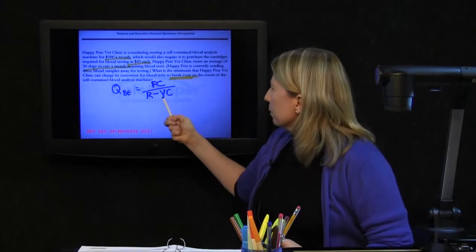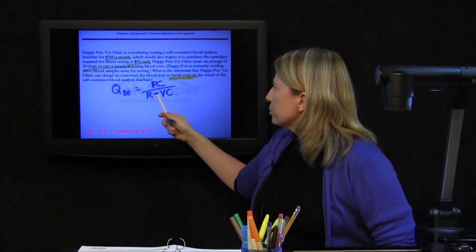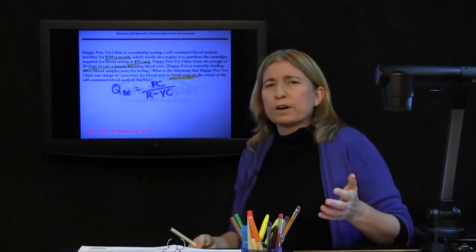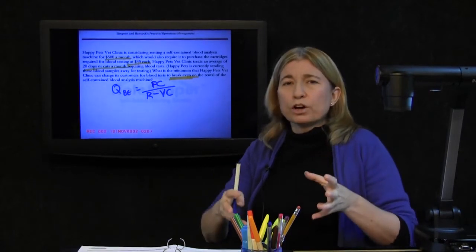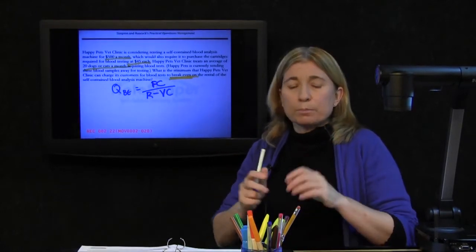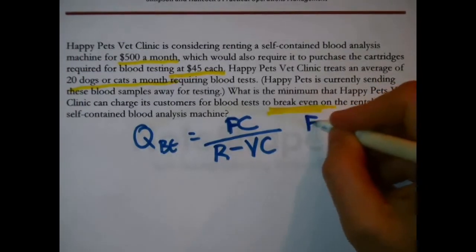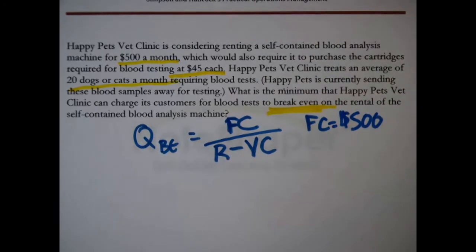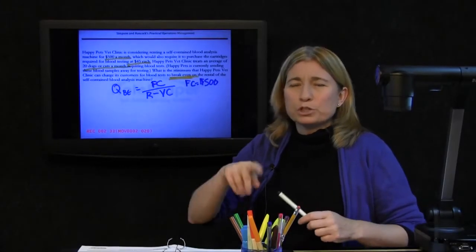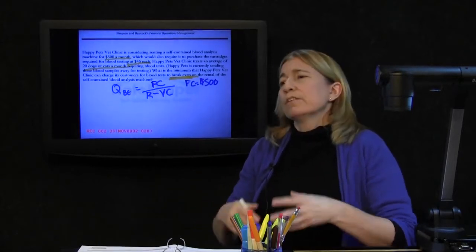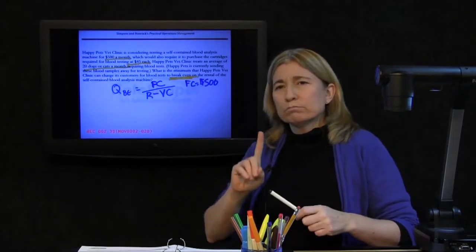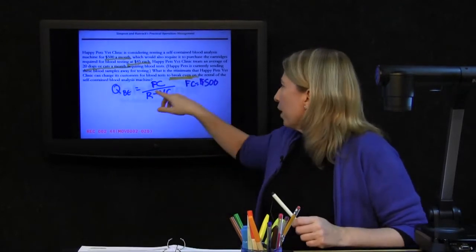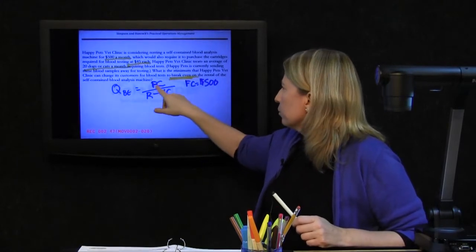In this problem here, I already see a bunch of these parameters. This business about an option where they could rent it for $500 a month, the $500 rental, that's a classic example of a fixed cost. What you're looking for in any fixed cost is a cost that will be paid regardless of how much you make use of what you're renting or purchasing. And if they rent the machine, it doesn't matter whether they do one blood sample test or 1,000, they still pay $500 a month. So actually, if we were to fill out this formula, we found the numerator, that's $500.